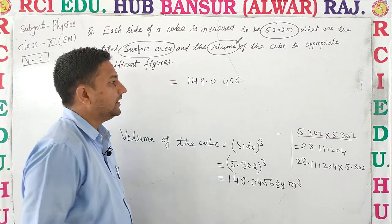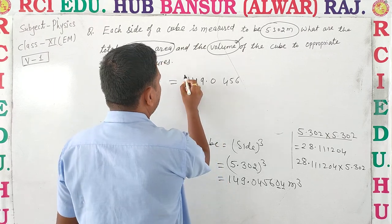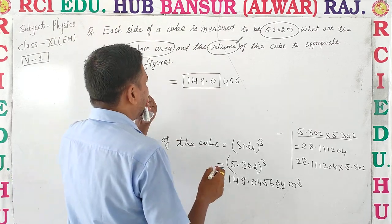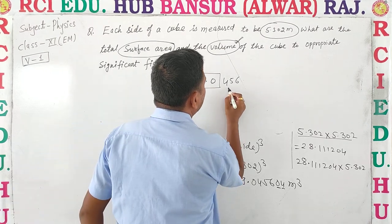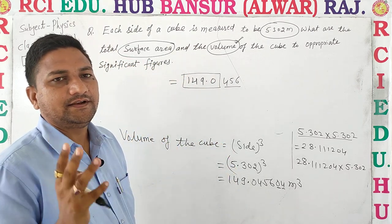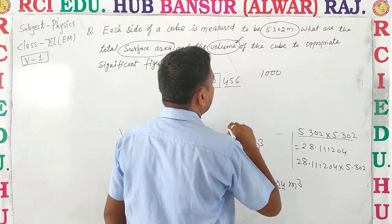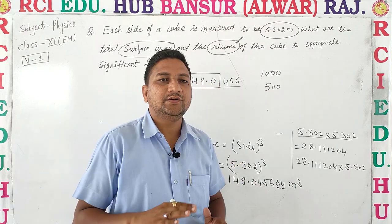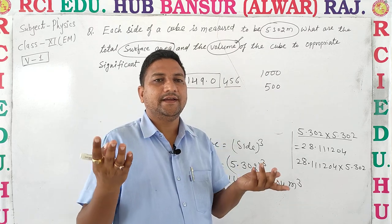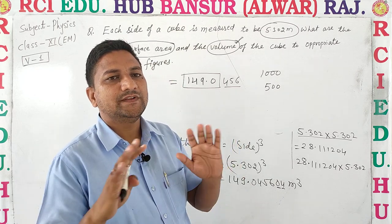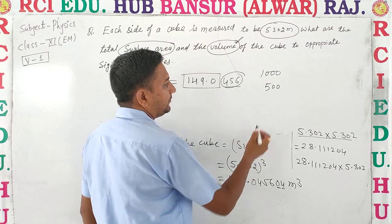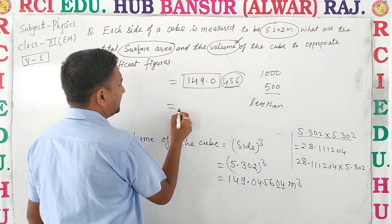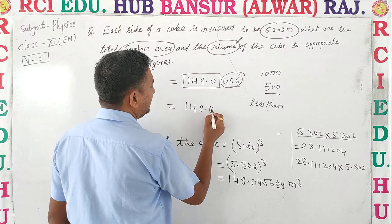4 significant figures तक रखना है, तो 456 को भी remove करना है। 456 में 3 digits हैं, base value है 1000, उसका half है 500. 456 जो है वो 500 से less than है — तो कोई change नहीं होगा। Final answer: volume = 149.0 meter cube.